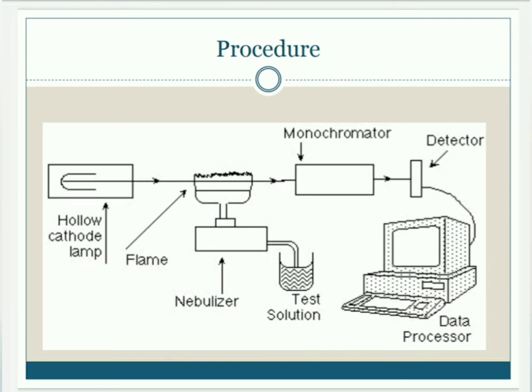The disadvantage of AAS is the lamp specificity. For example, to analyze sodium, we need a sodium lamp — a separate lamp is required for each element.